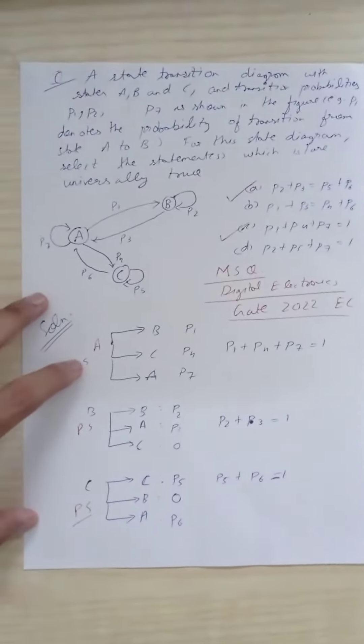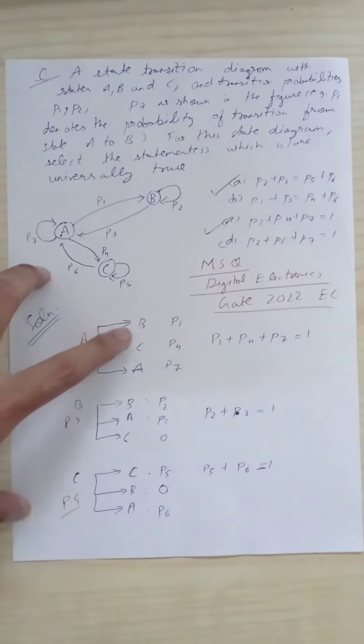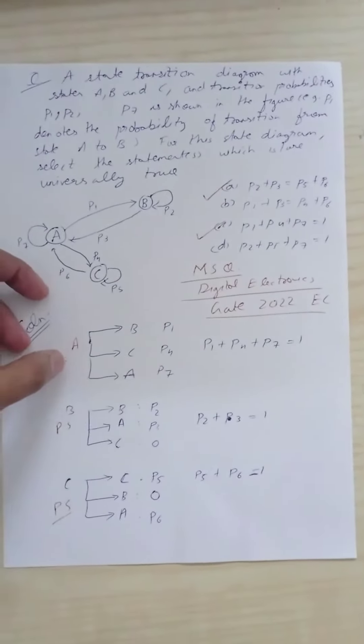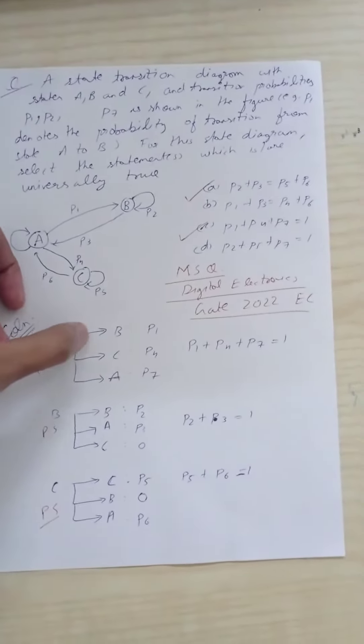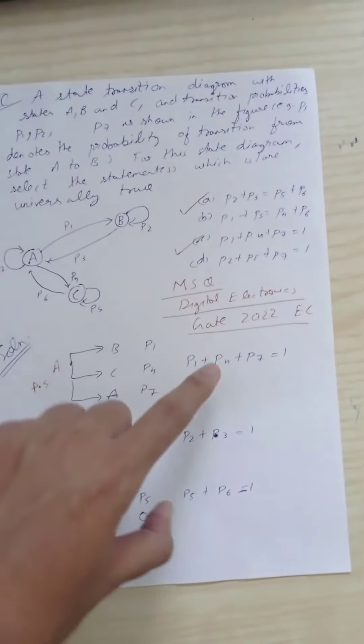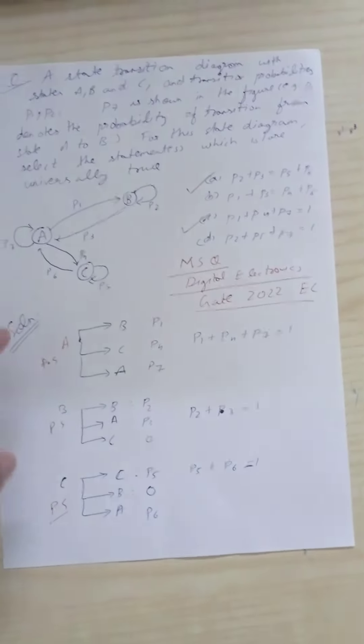Let's take present state A. It can transit to state B, C, or A with probabilities P1, P4, and P7. Obviously, from state A only these three probabilities are possible, so P1 + P4 + P7 = 1. Statement C is correct.